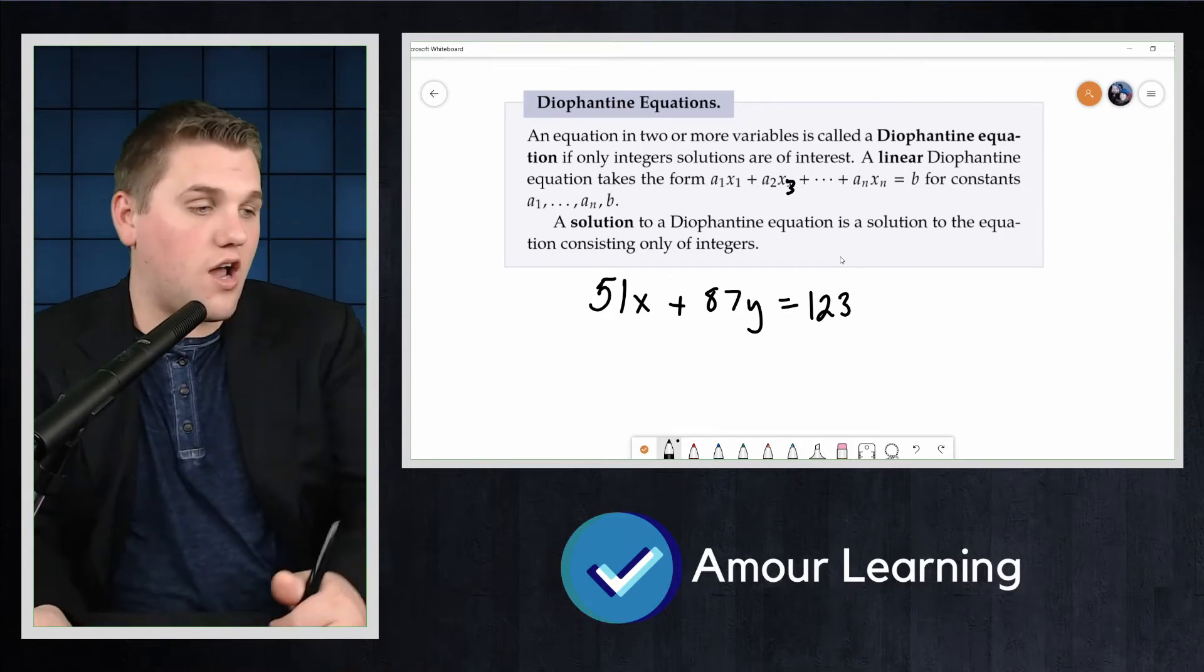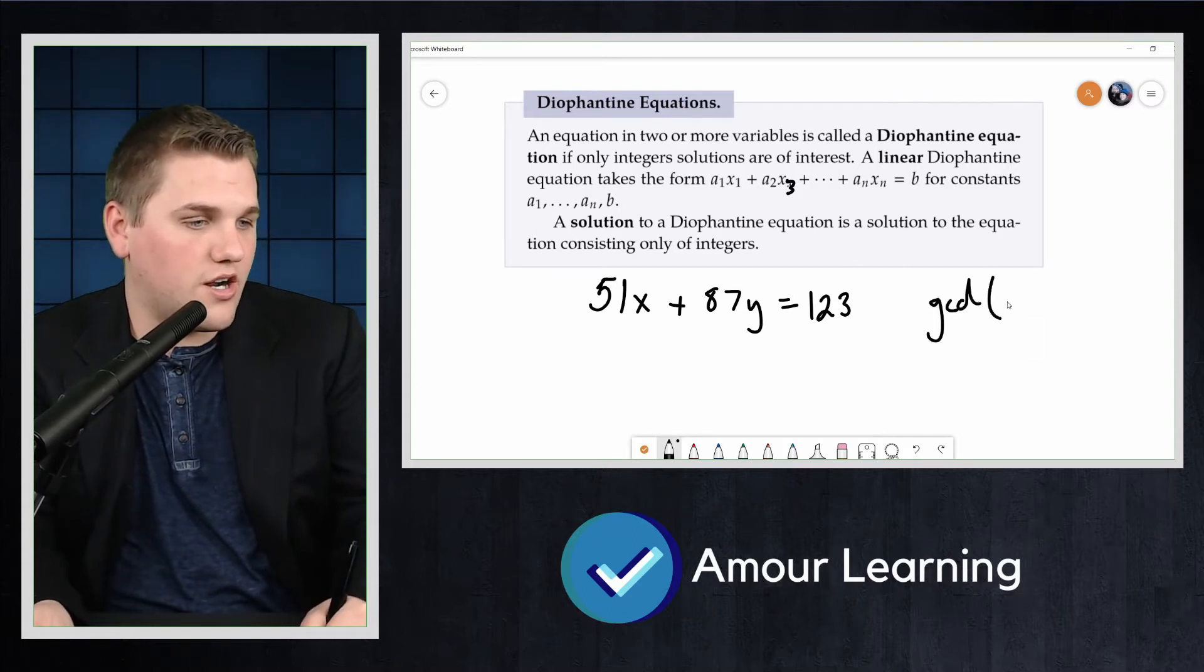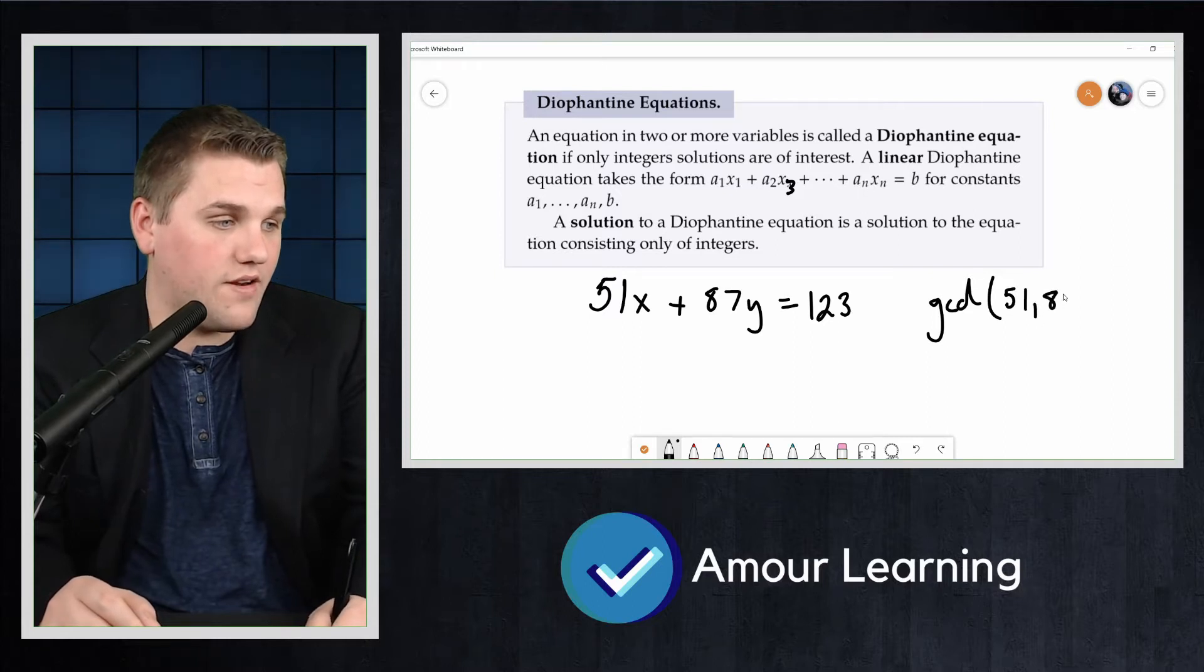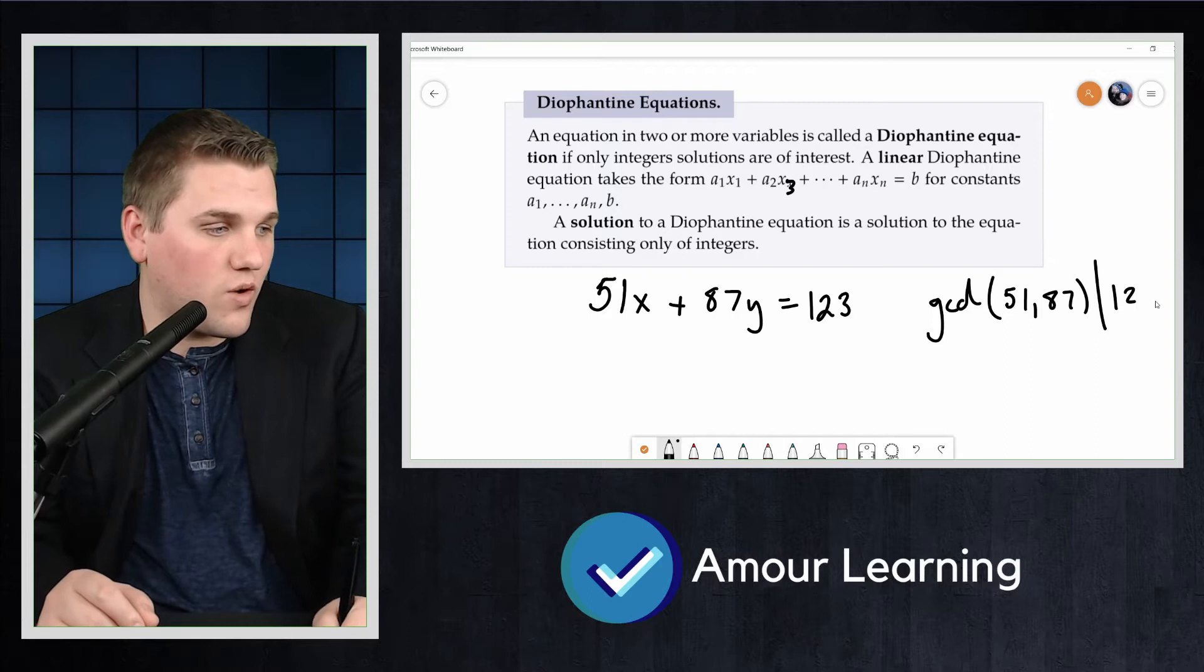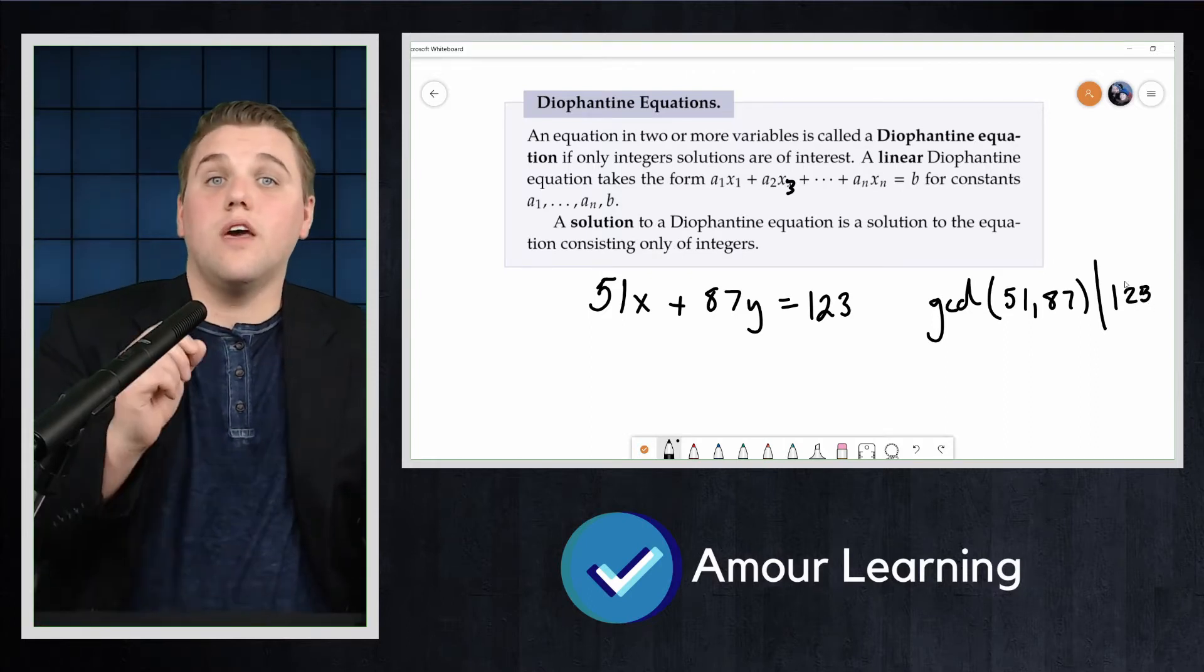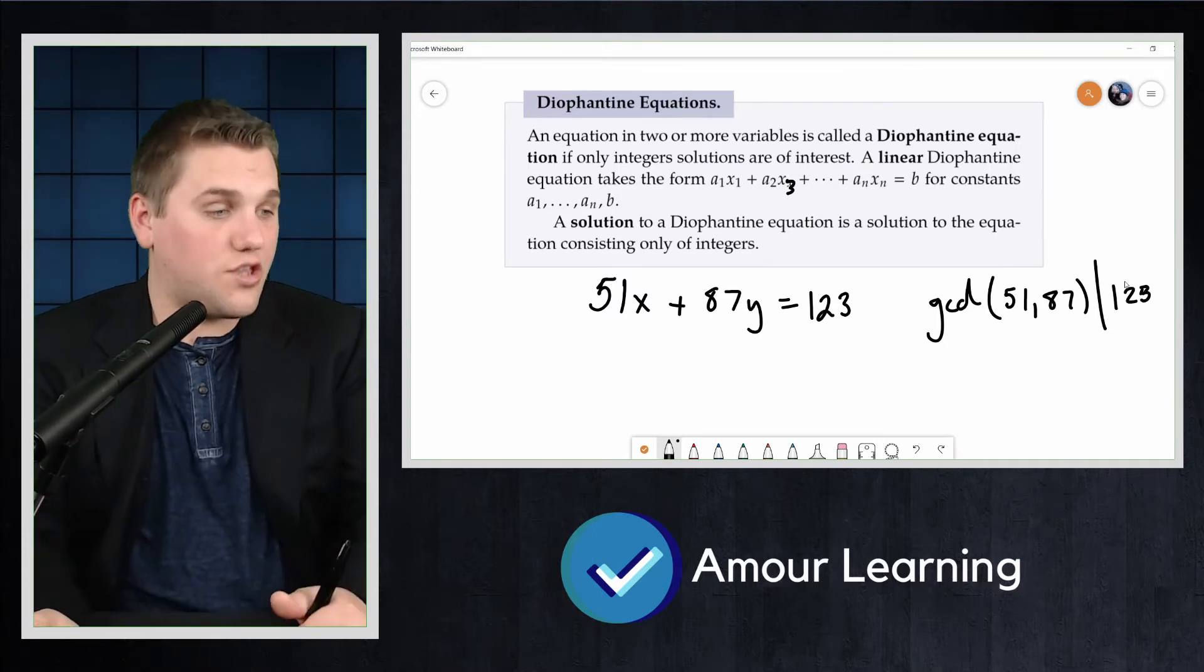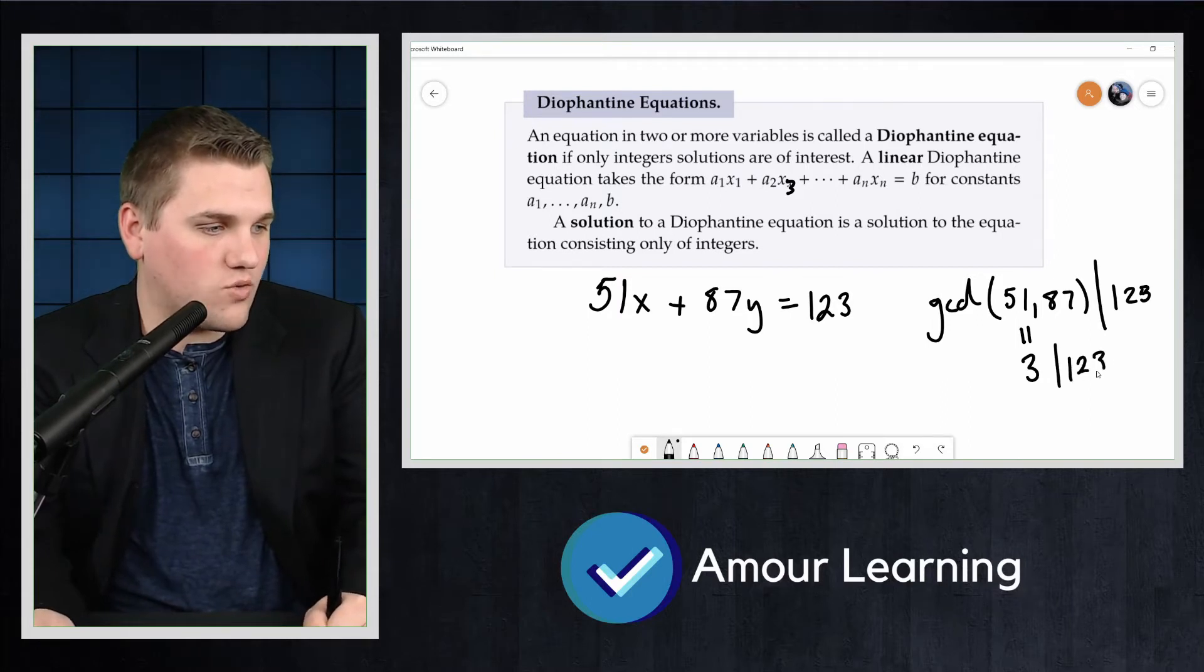Really we just need to check whether or not the GCD, the greatest common divisor, of 51 and 87 divides 123. This greatest common divisor is 3 and yes, 3 does divide 123.